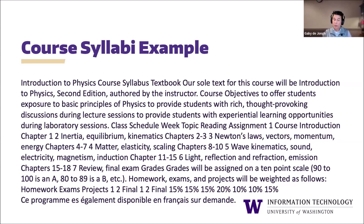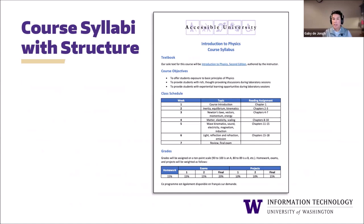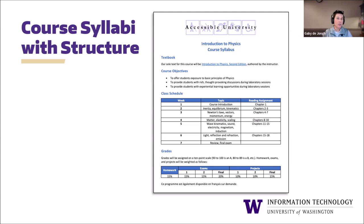On the next slide, I'm going to show you this exact same information but it's going to include some structure. We have the exact same content here, but now the information is organized visually and it's easier for us to understand. We can see that we have headings, a bulleted list, and a table that organizes the reading assignments by week, topic, and due date. Now we can see pretty easily that the required reading for week three is chapters four through seven — Newton's laws, vectors and momentum and energy.